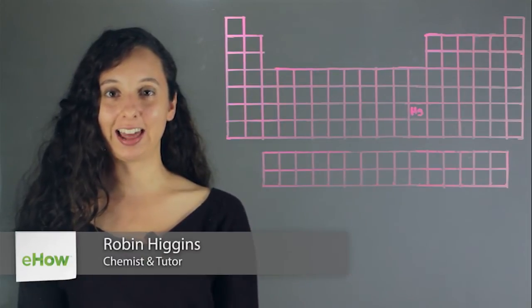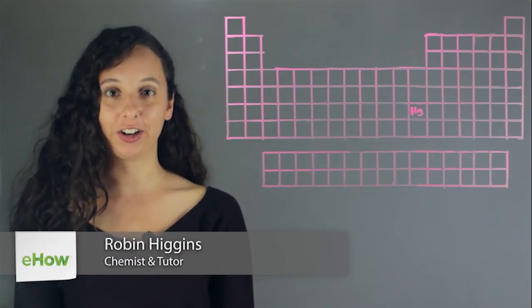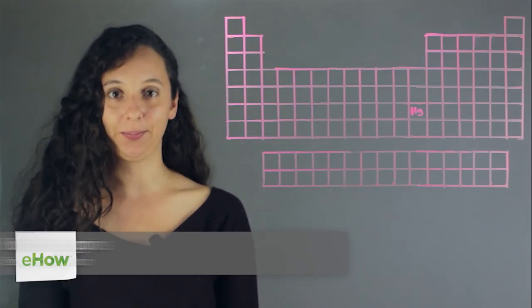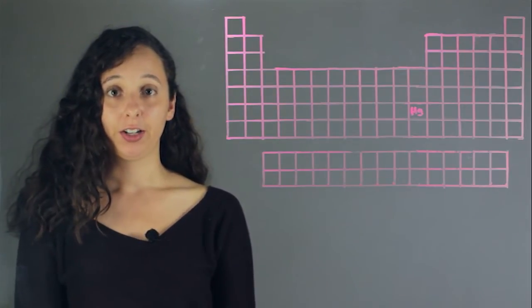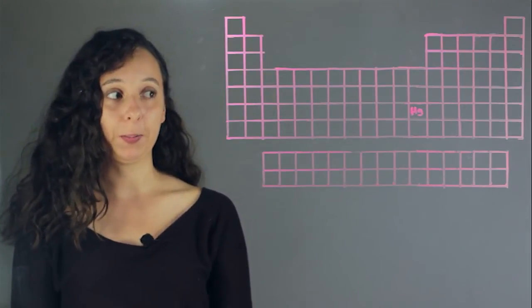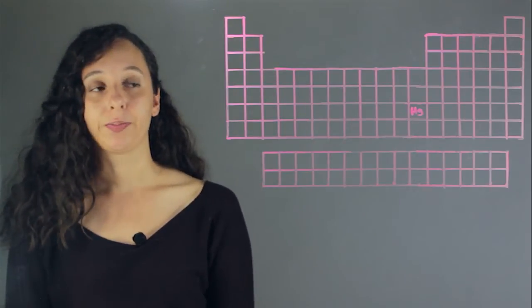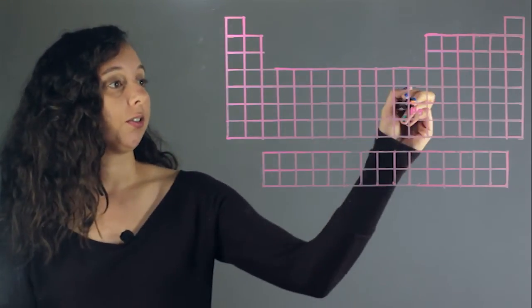Hi, I'm Robin Higgins, and this is what is the electron configuration of mercury? All right, so to answer this problem, we need to look at our periodic table and figure out where mercury is. So mercury is right here.